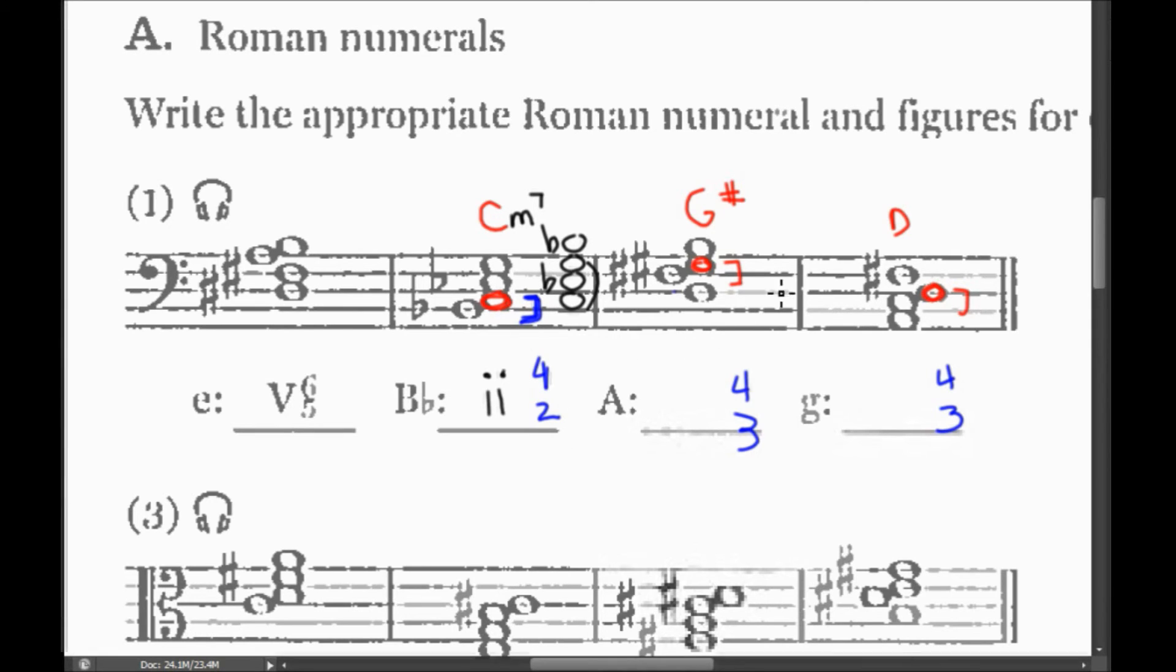I'm going to do the same thing over here with these ones. So G sharp, B—let's go ahead and write this off to the side again so we can see it. It's a little bit easier to see that way. So G sharp, B, D, and then I have an F sharp here. The quality of this triad—G sharp, B, D—that's diminished. So I'm going to add this little sign here, and then I need to look at my seventh.